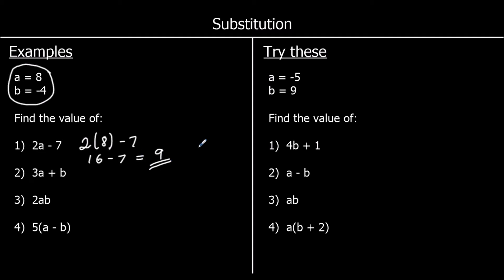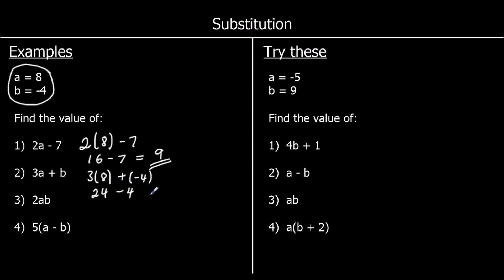The second one: 3a plus b. So 3 times 8, plus negative 4. 3 times 8 are 24, and we're adding negative 4. That's the same as taking away 4. So 24 take away 4 is 20.